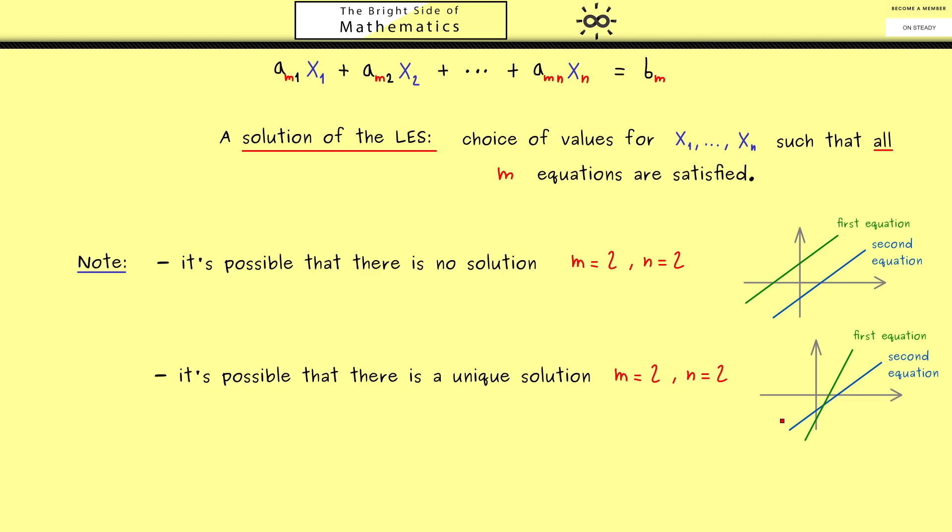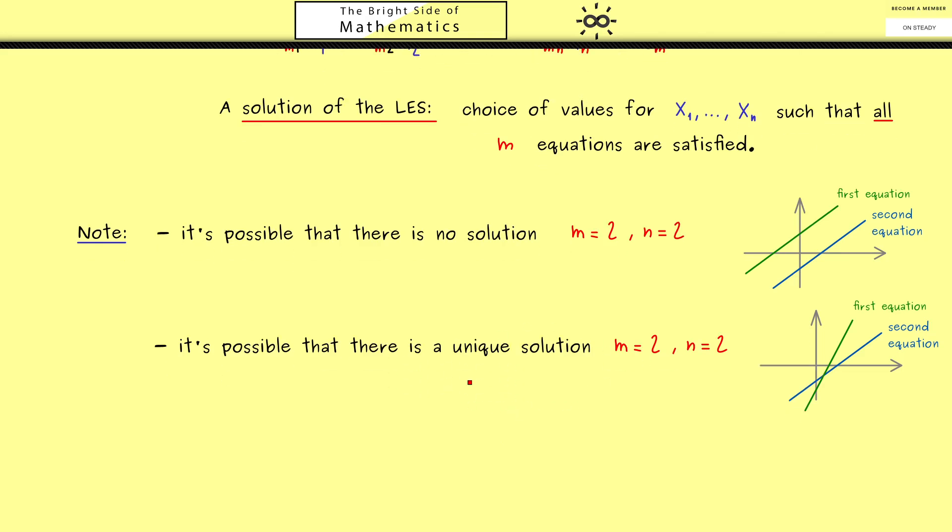And then you might already guess the third case is that we find a solution but it's not unique. In fact later we will see that if this is the case we have infinitely many solutions. Hence for our simple example here this would mean that both lines actually coincide. However in the case that we have more equations and more unknowns the picture could look more complicated. Nevertheless these three distinct cases are the only ones that can occur. Therefore from now on you really should have these three cases in mind.